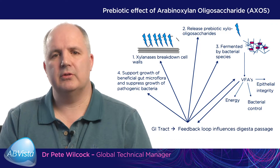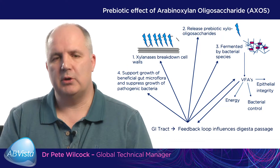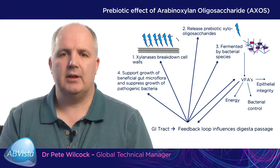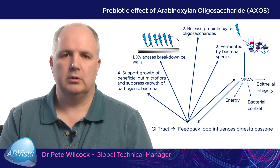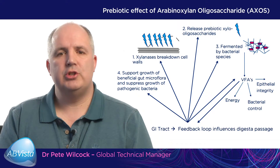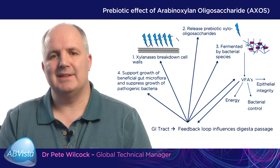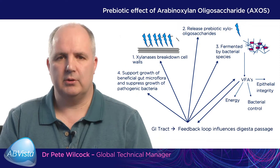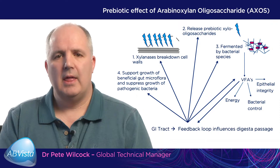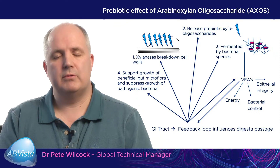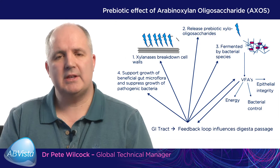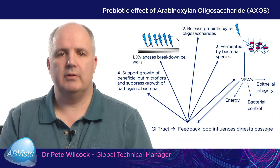If you look at the top left of the screen and go through this in a clockwise motion, you can see that in visual one, the long chain arabinoxylan is broken down by the xylanase into small chain xylooligomers. These xylooligomers are then fermented by the microflora in the lower hindgut of the animal, and this can have a multitude of effects.